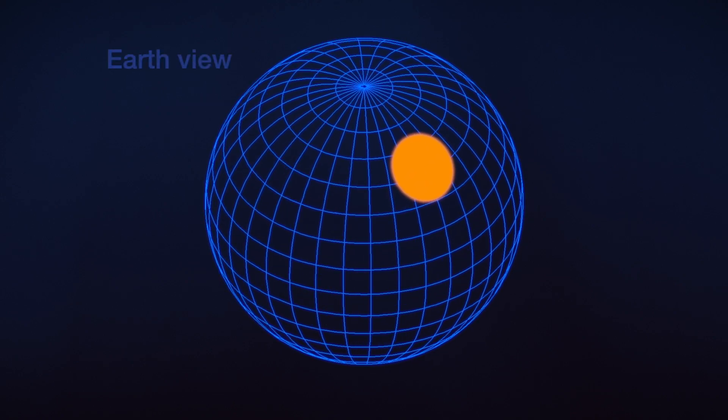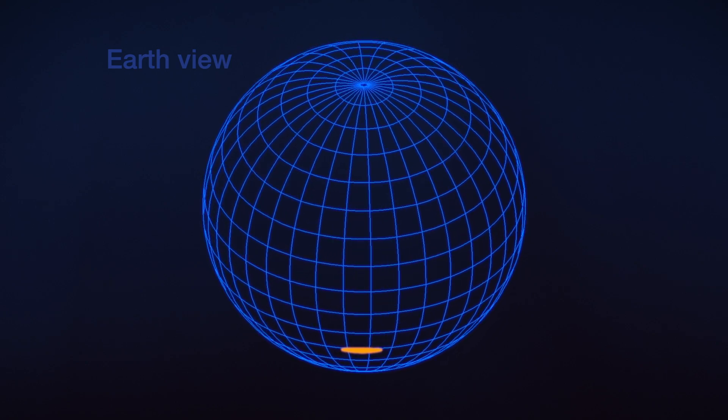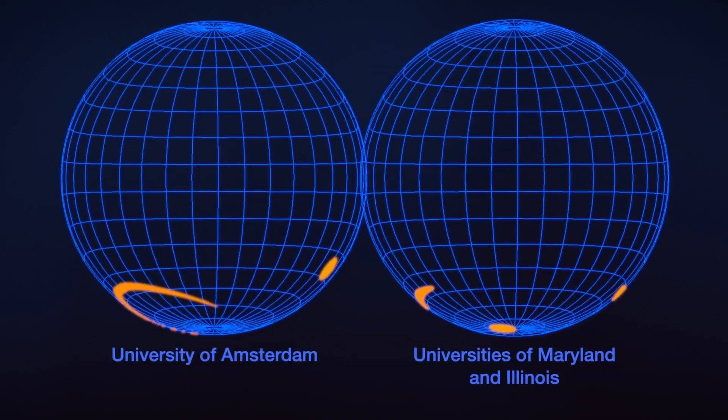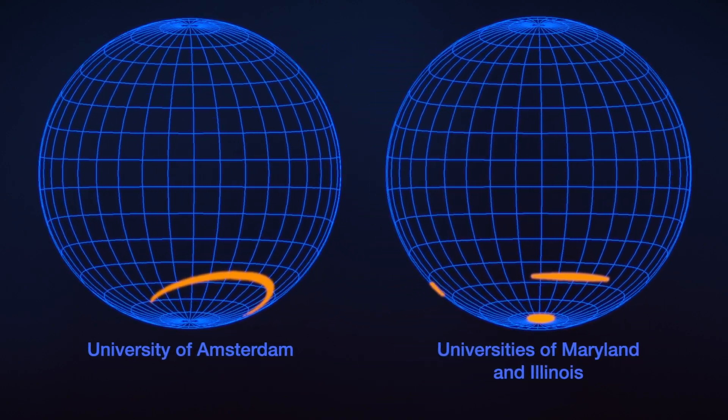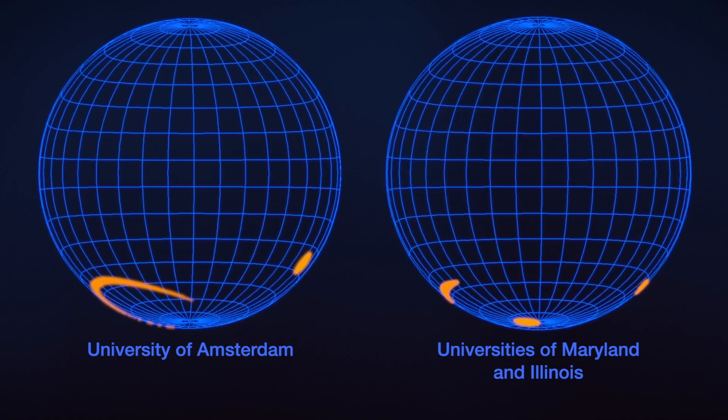From Earth, we look down onto J0030's Northern Hemisphere. Both teams say there are no spots there at all. Contrary to the simple magnetic dipole model, all the spots appear in the Southern Hemisphere, and are not necessarily in shapes we might expect.